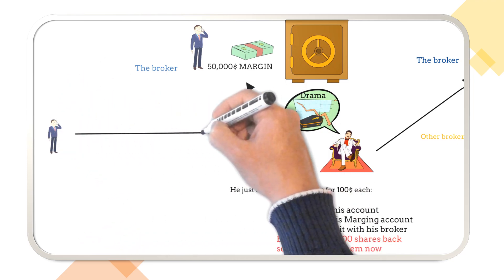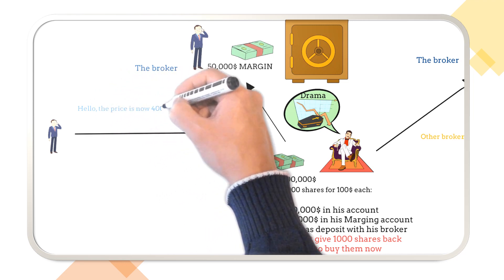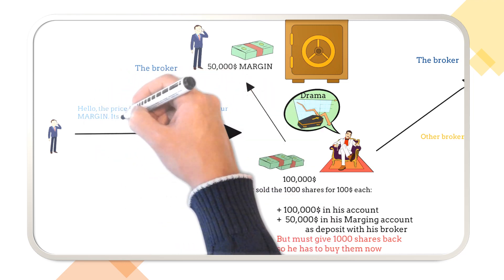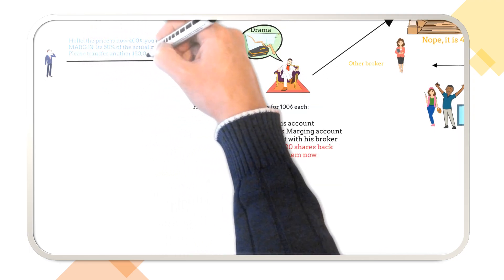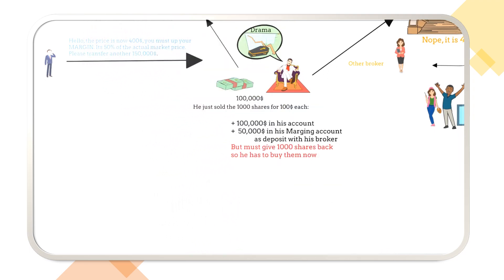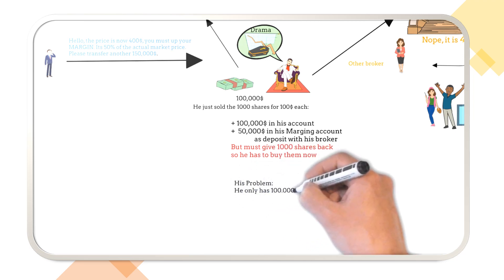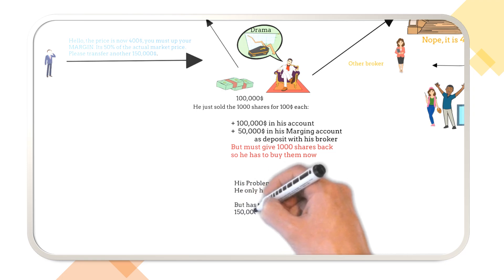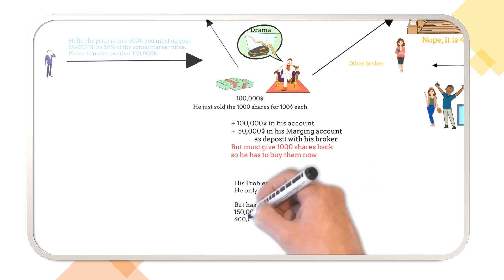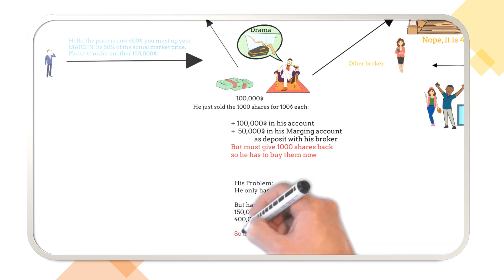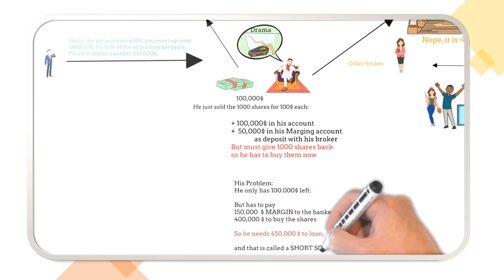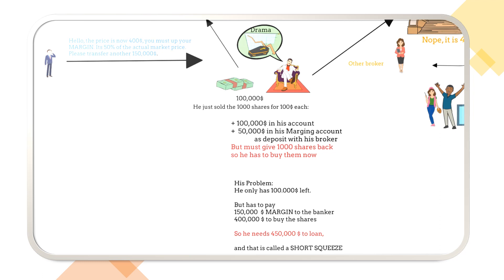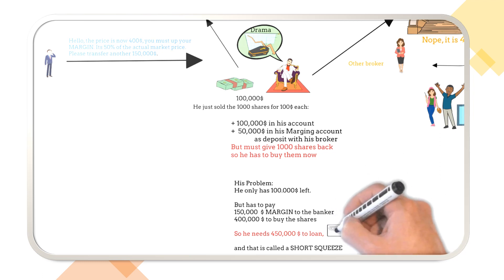This is the point where the problems come to the hedge fund manager. The broker calls and demands that he pay one hundred fifty thousand dollars to the margin account, because fifty percent of four hundred thousand is two hundred thousand, and he only has fifty thousand there. The problem is he only has one hundred thousand dollars from selling the shares, and on top of that he has to buy shares for four hundred thousand dollars. That is called a short squeeze.